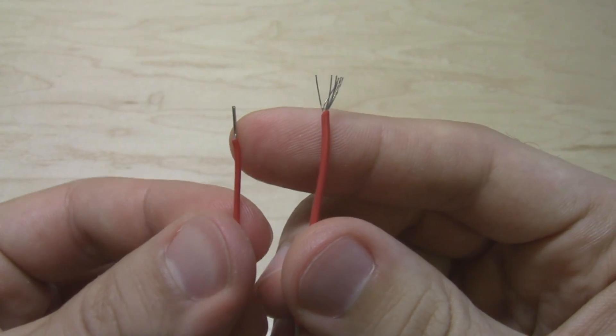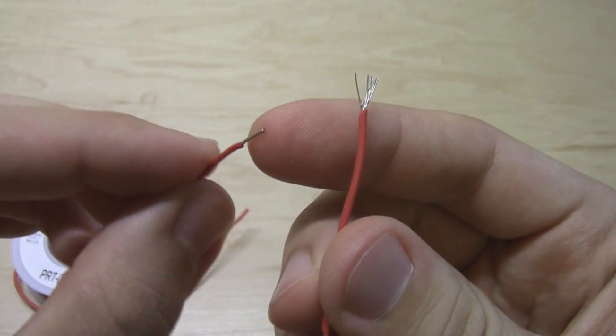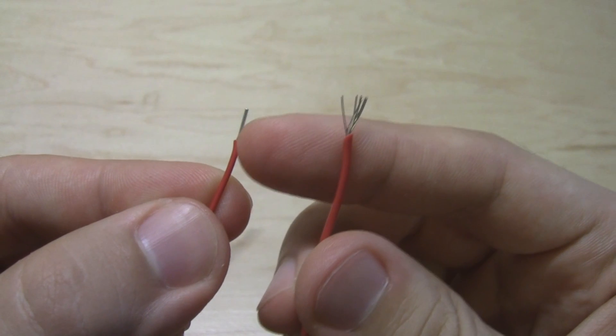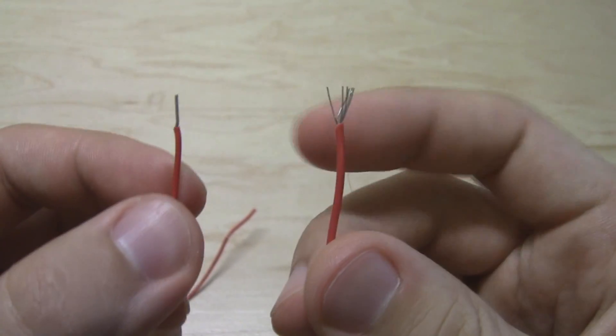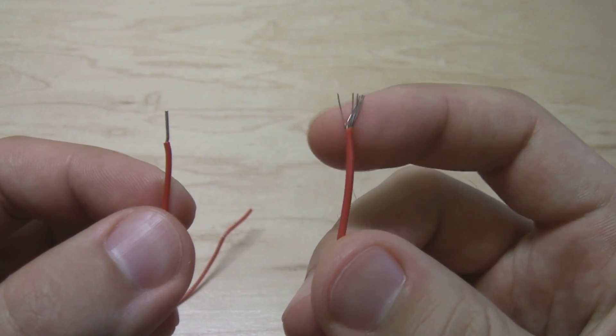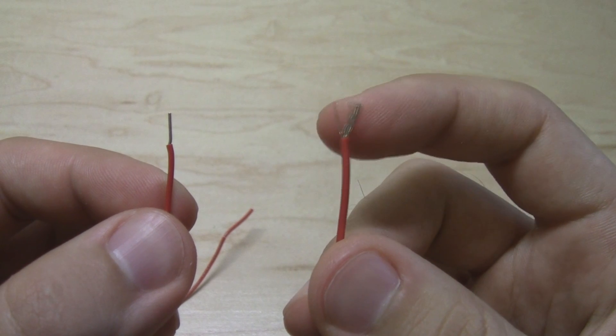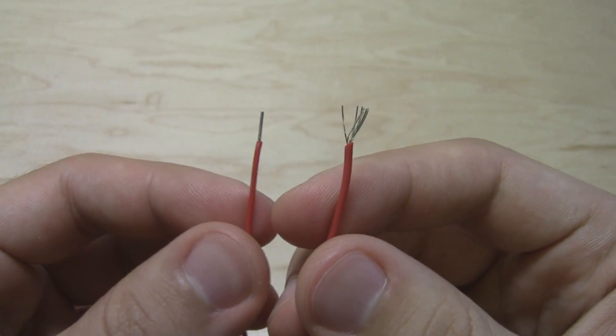And there are two main types of hookup wire called solid wire and stranded wire. So you see here in my left hand, I have solid core wire where the middle metal part of the wire is just a single continuous piece of metal. And in stranded wire, the middle of the wire is actually made up of many individual smaller strands that are twisted together kind of like a rope.